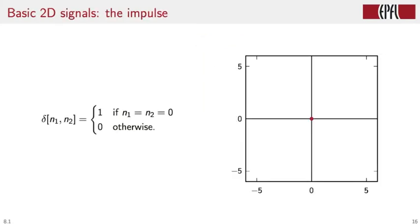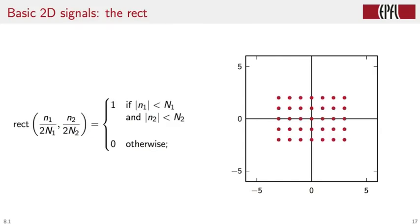Just like we did for the 1D case, here are some basic signals. The first one we have already seen in passing is the delta, the impulse, which is zero everywhere except in the origin where it is equal to 1, and the support representation is like so. The two-dimensional rect signal is defined by two parameters, which we may call the width and the height of the rect, and it is zero everywhere except in a rectangular region, which is defined by those values of the N1 index that are smaller than capital N1 in magnitude, and those values of the N2 index that are smaller in magnitude than capital N2.